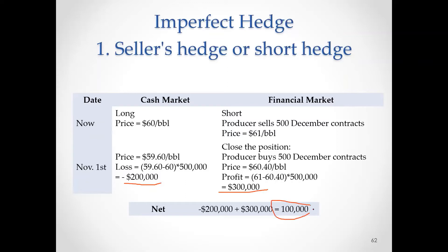The net result is positive $100,000. So in this case, we ended up making money under this hedging strategy. We are protected against losses and also made some extra cash.